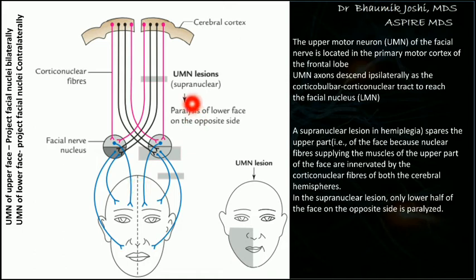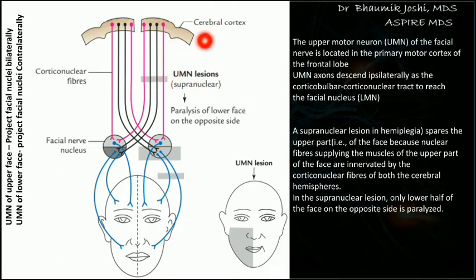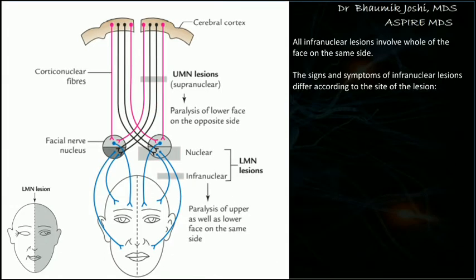If there is an upper motor neuron lesion, say on the right side, the forehead is not affected because it receives bilateral supply. However, the right upper motor neuron was supplying the lower half of the contralateral side. So with a right-sided upper motor neuron lesion, paralysis will affect the lower half of the contralateral, that is left, side of the face.